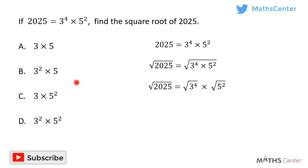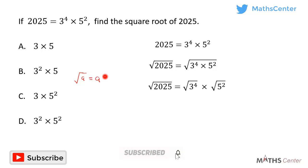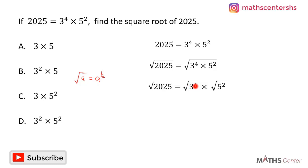From indices, we know that the square root of a can be written as a exponent 1 divided by 2. So applying that here, the square root of 3 exponent 4 can be written as 3 exponent 4 times 1 divided by 2. In the same way, the square root of 5 exponent 2 can be written as 5 exponent 2 times 1 divided by 2.